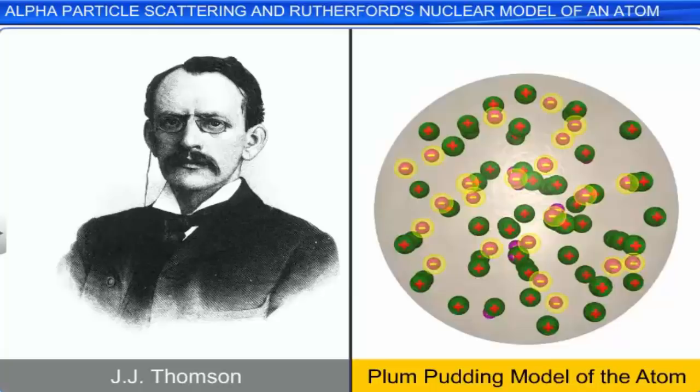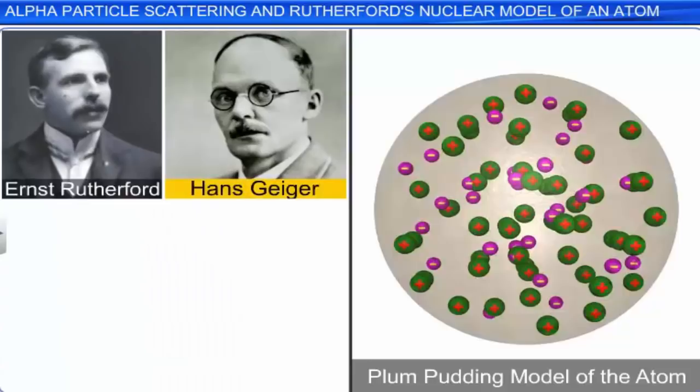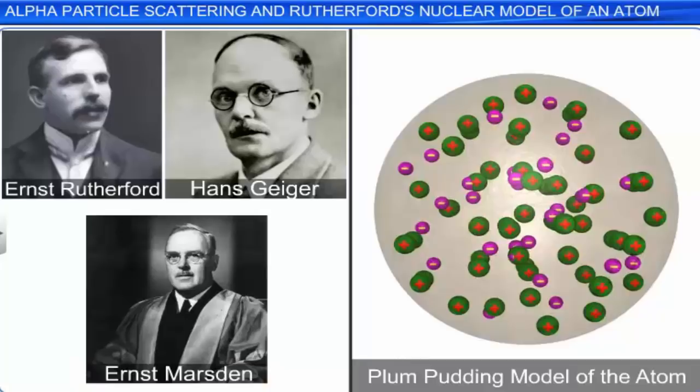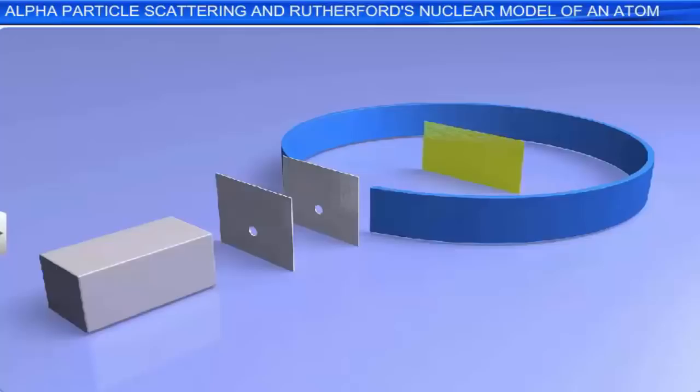Subsequently, an experiment proposed by Ernst Rutherford and carried out by his students Hans Geiger and Ernst Marsden, to understand the structure of the atom, proved that the plum pudding model was not in agreement with the experimental results. Rutherford proposed that the scattering of alpha particles from atoms of an element would be helpful in understanding the structure of the atom. Let us now study Rutherford's alpha particle scattering experiment, which led to Rutherford's nuclear model of the atom.